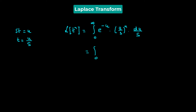The integral becomes the integral from zero to infinity of e^(−u) times u^n times du, divided by s^n times s. Combining the s terms gives s^(n+1) in the denominator, which we pull out of the integral, giving one over s^(n+1) times the integral from zero to infinity of e^(−u) times u^n du.